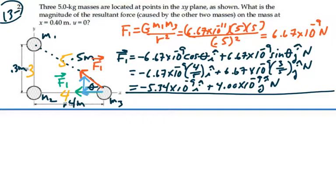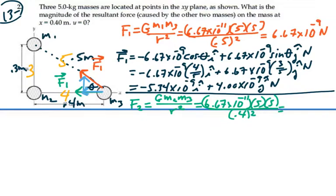For F2, that's equal to, at least in magnitude, G mass 2 mass 3 over the distance between them squared. And that's 6.67 times 10 to the minus 11 times mass 2, 5, times mass 3, 5. Now the distance between them is only 0.4 meters squared. And this is equal to 1.04 times 10 to the minus 8 newtons. So as a vector, since it's all in the negative x direction, F2 as a vector is negative 1.04 times 10 to the minus 8 i newtons.